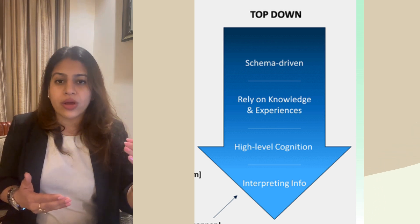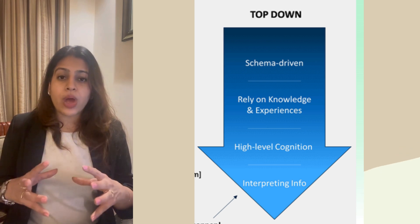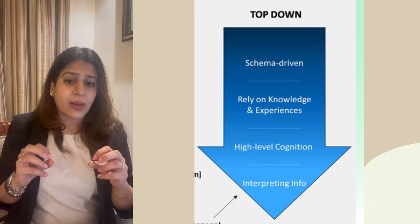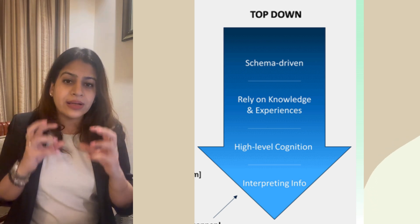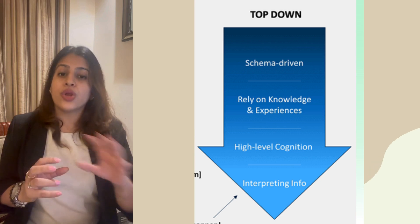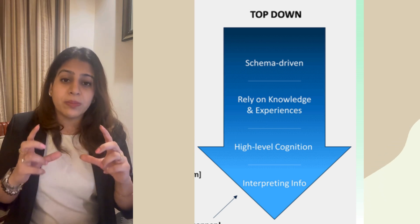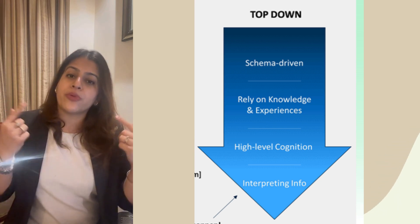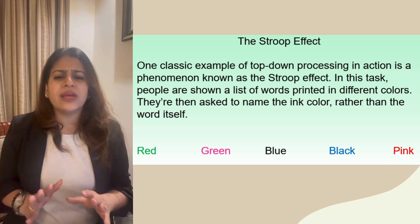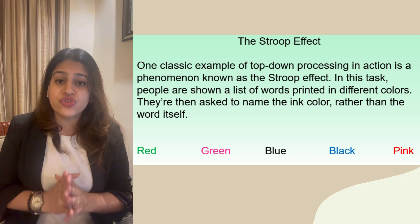In top-down processing, it is all schema-driven and not sensory-driven — it is high-level cognition. Whatever information is coming in, you are interpreting that information not on the basis of senses but on the basis of your prior experiences.